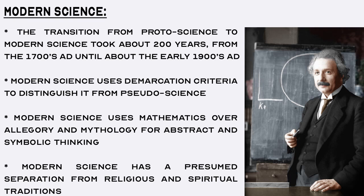The mythology, allegory, and symbolism used in proto-science could come across as mysterious, cryptic, and ambiguous to those untrained in ways to decode the message. Mathematics has the ability to be just as mysterious and enigmatic as mythology to those not educated in it. However, the rigorous deductive logic and reasoning present in mathematics — which is not necessarily present in mythology — makes mathematics the best mental tool for abstract thought and science. With modern science separating mathematics from mythology as the best tool for abstract symbolic thinking, there is also a presumed separation between modern science and religion and spirituality, whereas that connection was more prevalent in proto-science.